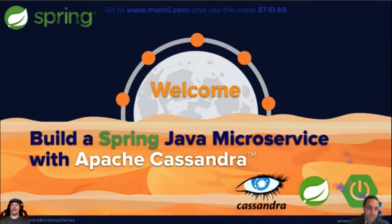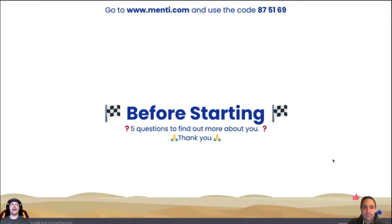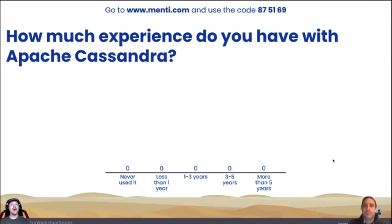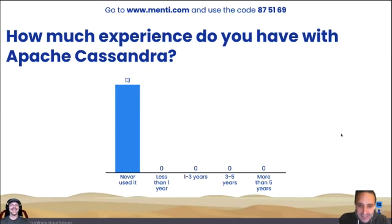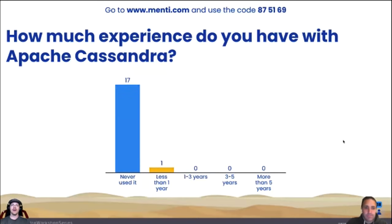These are anonymous survey questions so we can find out more about you. Once you do this part, it will set you up for the quiz later. The first question is: how much experience do you have with Apache Cassandra? The results are coming in — it looks like almost everybody has never used it. That's good to know because we'll need to explain some things about Cassandra. We also have one person with less than one year of experience.